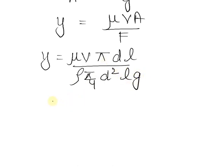On solving this expression we have the value for y equals to 4 mu v divided by rho d g.